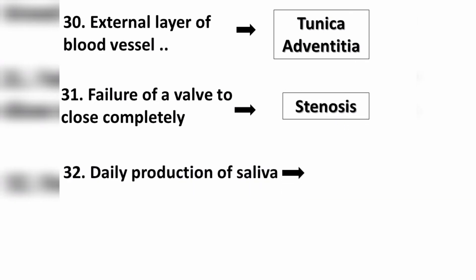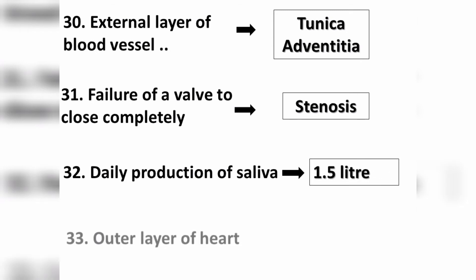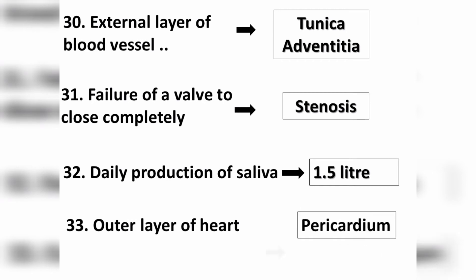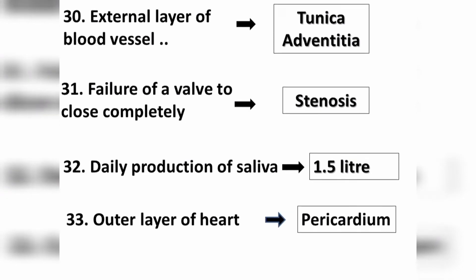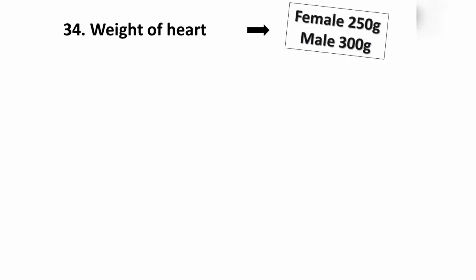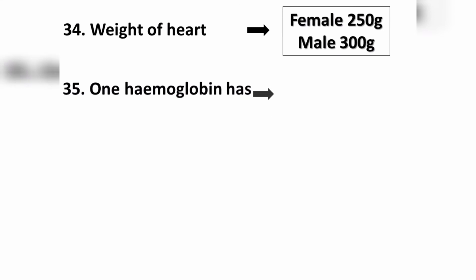Question number thirty-two: the daily production of saliva is approximately 1.5 liters. Question number thirty-three: the outer layer of the heart is called the pericardium. Question number thirty-four: the weight of the heart in the human female body is 250 grams and in the male 300 grams.